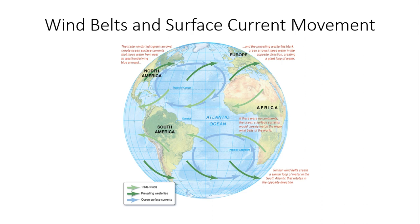The lightest green arrows represent the trade winds, which generally blow from the northeasterly direction in the northern hemisphere and from the southeasterly direction in the southern hemisphere. The darker green arrows represent the prevailing middle latitude westerlies in both hemispheres. The blue arrows indicate those ocean surface currents, showing how the wind circulation around these large gyres plays into the movement of ocean currents.